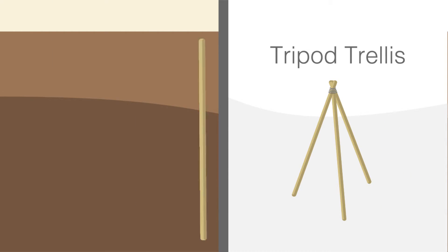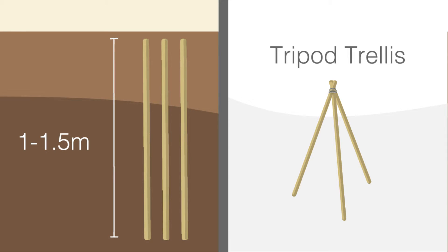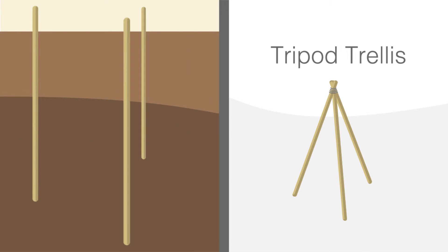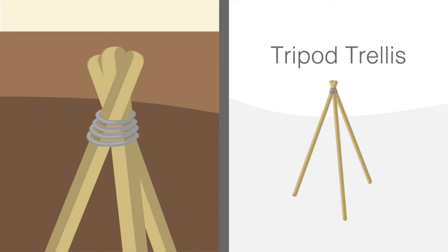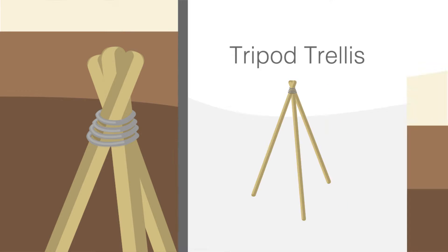For a tripod trellis, arrange three one to one and a half meter sticks or poles in a tripod with tops together and legs spread equally apart. Use string or thin metal wire to tie the tops together tightly.